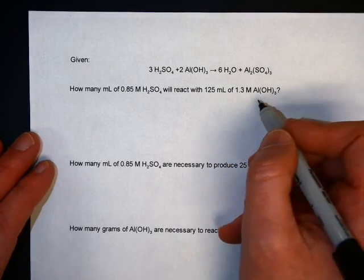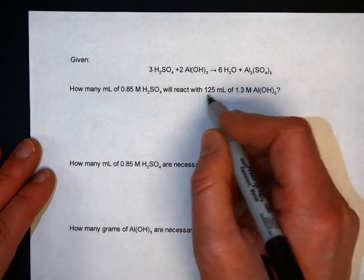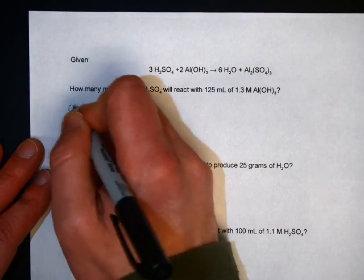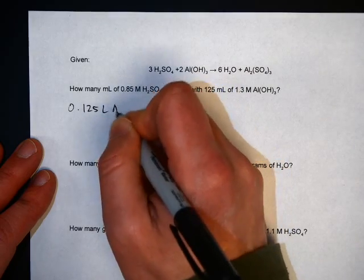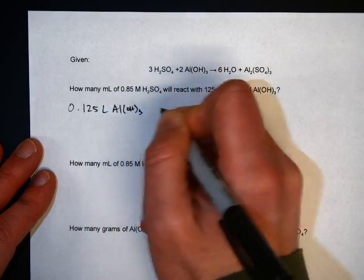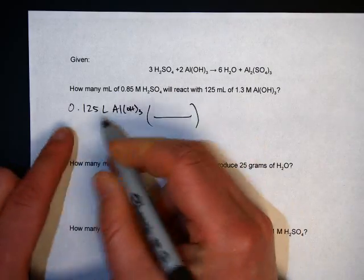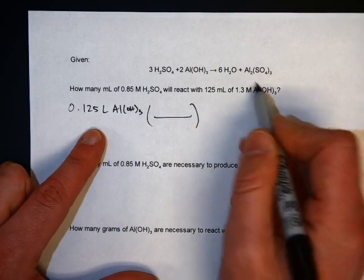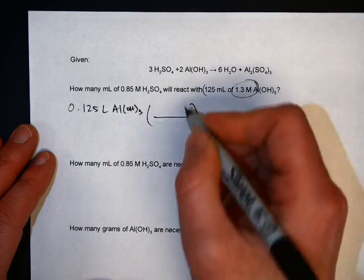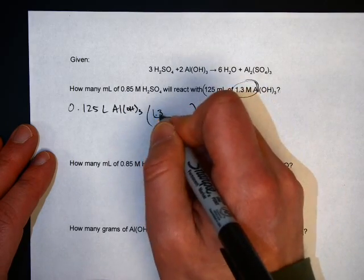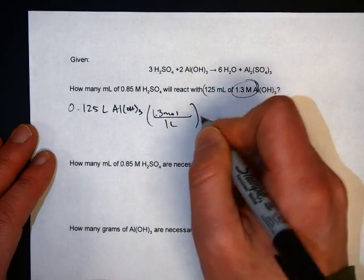So when you start these problems, never start with a capital M number, always start with the other numbers. That's 0.125 liters of Al(OH)3. And to get from liters to moles you need to use this number, the molar mass. It's that one that's paired. See how they're paired together, so stick with that one. 1.3 molar means 1.3 moles in one liter. Liters will cancel out them.